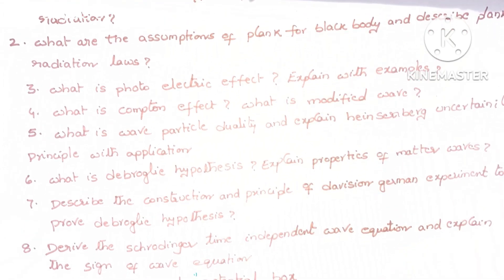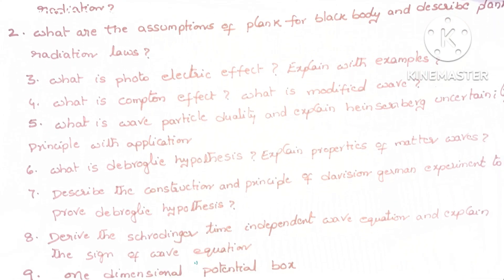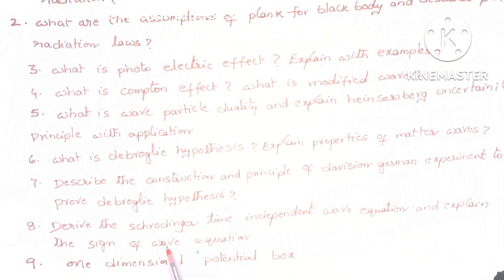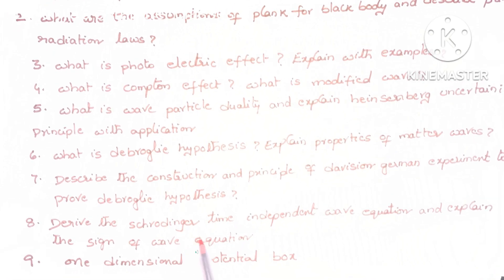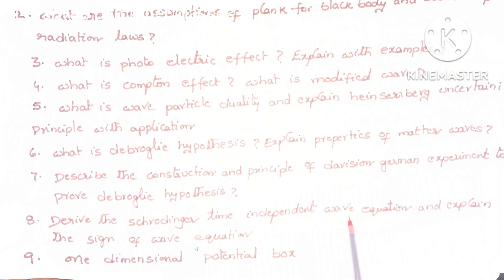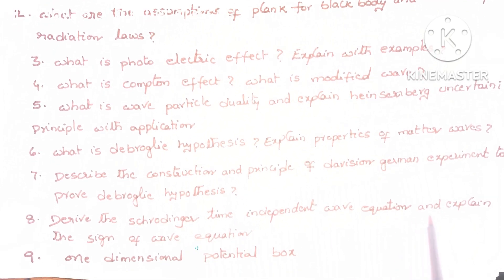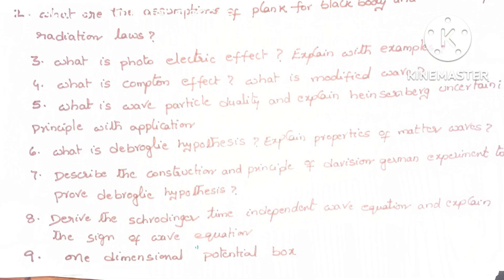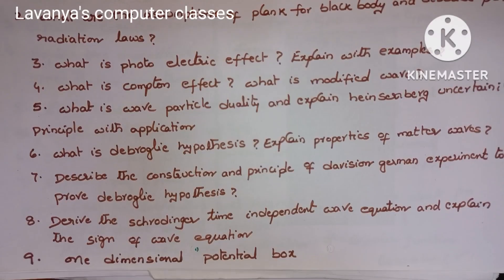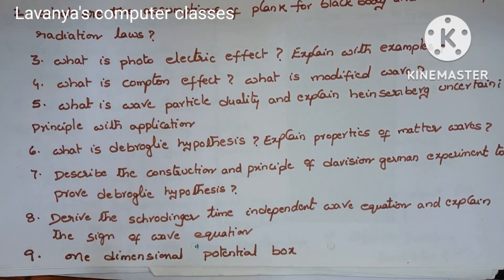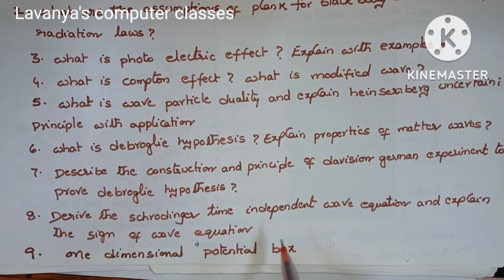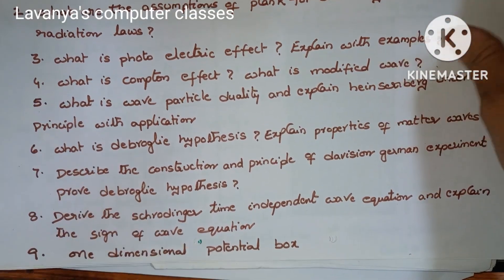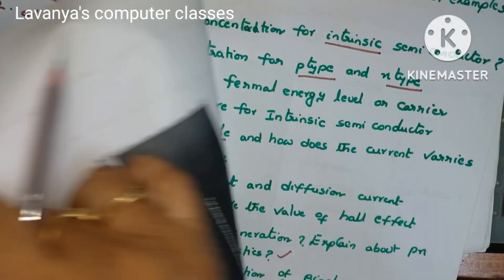Seventh question is also an important question — read it carefully. It asks you to describe the construction and principle of the Davisson-Germer experiment to prove de Broglie hypothesis. Eighth question is derive the Schrödinger time-independent wave equation and explain the significance of the wave function. Ninth question is the one-dimensional potential box, which is also an important question.